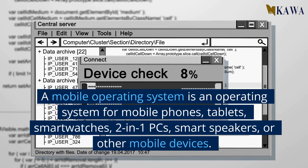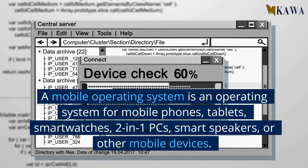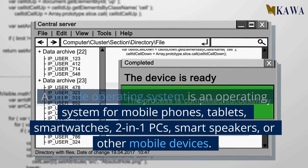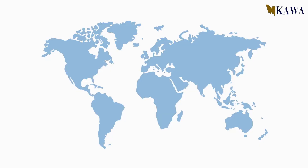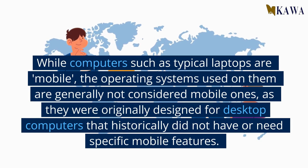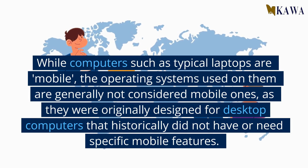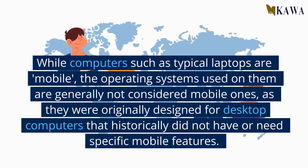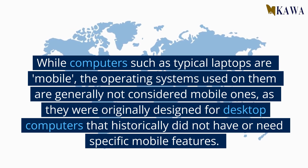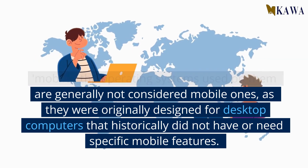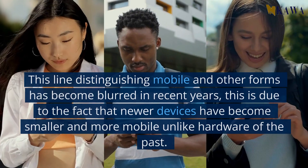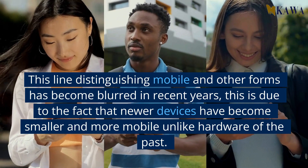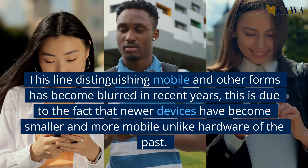A mobile operating system is an operating system for mobile phones, tablets, smartwatches, two-in-one PCs, smart speakers, or other mobile devices. While computers such as typical laptops are mobile, the operating systems used on them are generally not considered mobile ones, as they were originally designed for desktop computers that historically did not have or need specific mobile features. This line distinguishing mobile and other forms has become blurred in recent years.